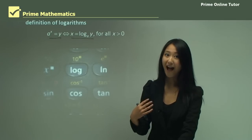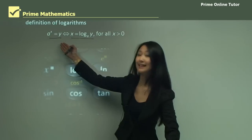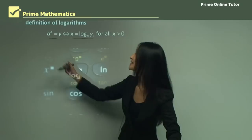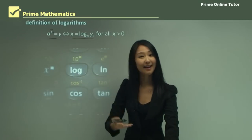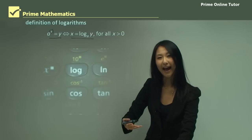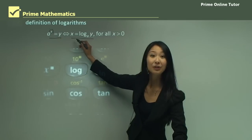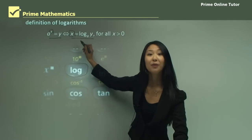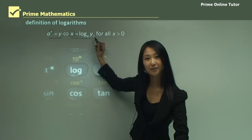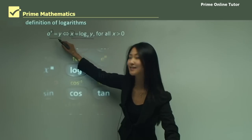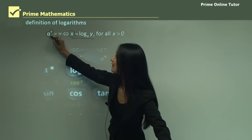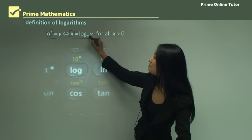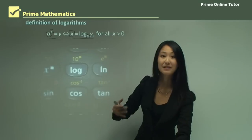A little trick to remember this: with your basic index form, what we're actually trying to work out is what the index equals — so in this case, that's x. When we change it into logarithm form, that's why we have x equals, or the index equals, the logarithm. Also, the base of the index is a, and the base of the logarithm is also a.